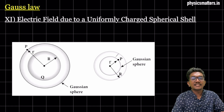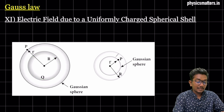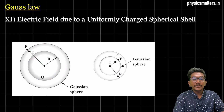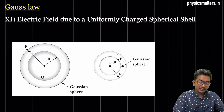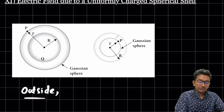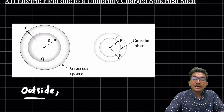This is very simple. Here is a shell whose radius is capital R, and small r is the radius outside. We are going to do the electric field outside first, then on the surface, then inside.